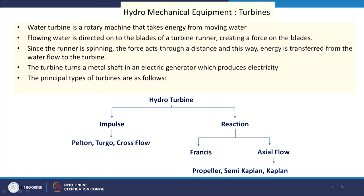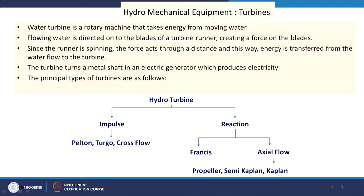Hydromechanical equipment converts kinetic energy of water into mechanical energy, and the turbine is the major part of it. When water falls on the turbine blade it rotates, which is connected to a shaft coupled with the generator for electricity production. A water turbine is a rotary machine — flowing water is directed onto the blades of a turbine runner, creating a force. The turbine turns a metal shaft in an electric generator. The principal types of turbines are impulse and reaction.